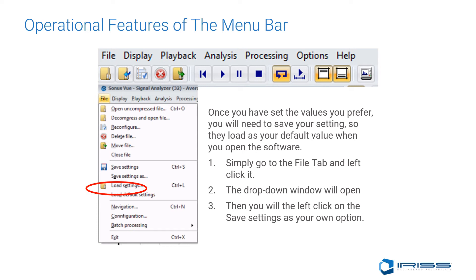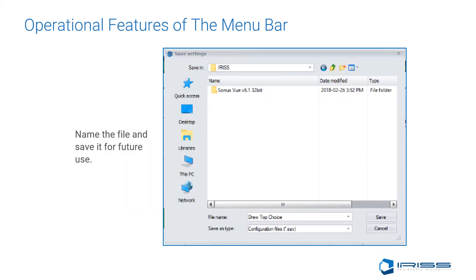To save your settings, go to the File tab and left-click it. The drop-down window will open, then scroll down and left-click on 'Save Settings as Your Own' option. Then name the file and save it for future use. Click Save and the process is complete.